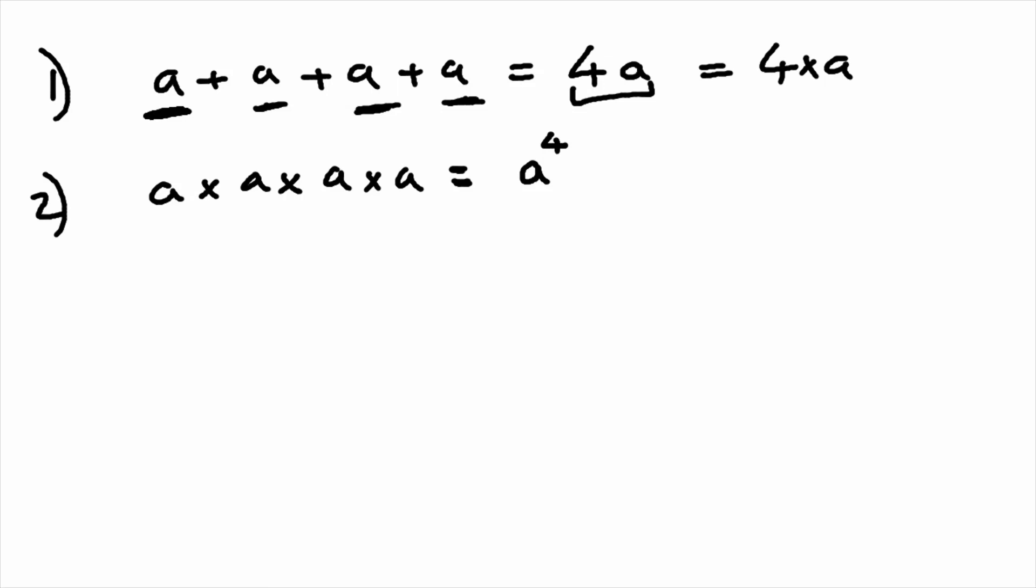So when we are adding four lots of A, the four sits out front because we have four multiplied by A. When we have A multiplied by itself four times, we write the four as a power of A.